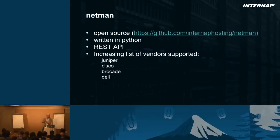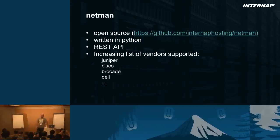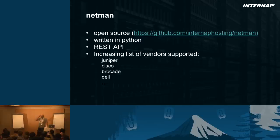Netman was developed in-house and is open source — if you want to try it, feel free. It's written in Python by a really good team of developers who work with OpenStack all the time, so it's very similar to the rest of the OpenStack ecosystem. It has a REST API. It supports a lot of equipment because as a service provider we have different switches and routers, and Netman has to work properly with all of these.